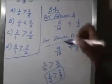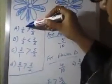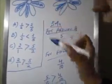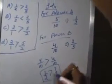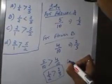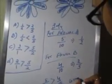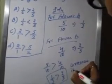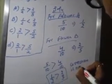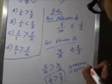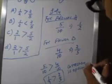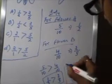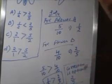Now go to the options. Our first option is 1 by 2 is greater than 2 by 5. So the correct answer is option A.